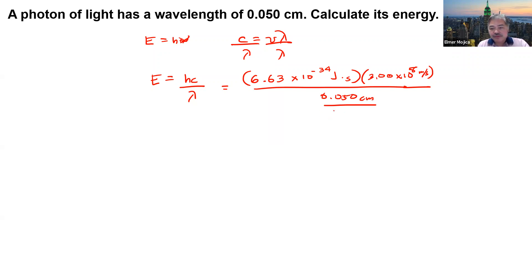Over 100 centimeter per meter. So cancel the ones that we can cancel, and we have here the joules. And when we do the calculation, we should be able to get 3.98 times 10 to the negative 22 joules. So please check.